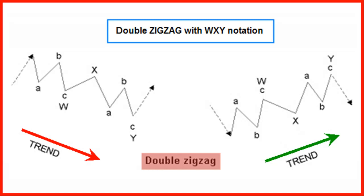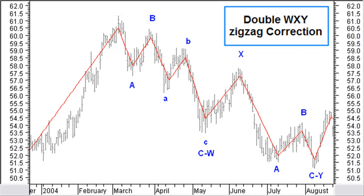Wave W must be a zigzag pattern. Wave X can be any correction pattern, and wave X is smaller than wave W. Wave Y must be a zigzag pattern, and wave Y is at minimum equal or bigger than wave X. Wave X2 can be any correction pattern, and wave X2 is smaller than wave Y. Wave Z must be a zigzag pattern, and wave Z is at minimum equal or bigger than wave X2. Example of a double WXY zigzag correction with two ABC zigzags connected via the X wave and with a lower degree extension in the first C wave.